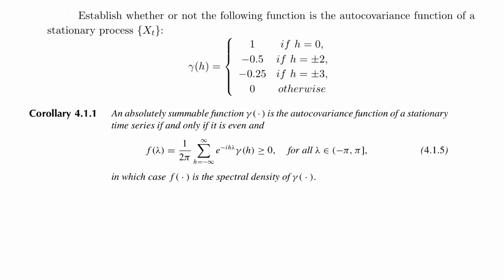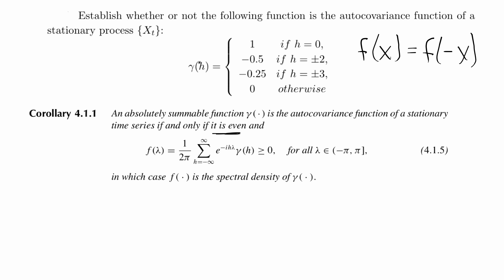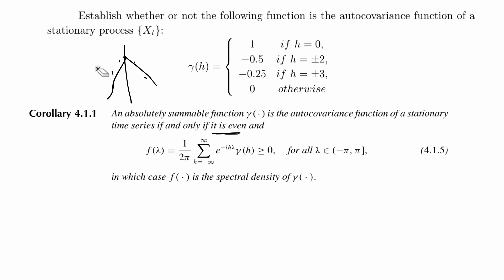So let's go ahead and solve the problem. The first thing we need to determine is whether or not this is an even function, and we can see very quickly that it is just from the definition of the domain. An even function means f of x equals f of negative x. We have plus or minus 2, plus or minus 3, and 0 as the only values where gamma of h is defined, and the values are the same for positive and negative. So this function is clearly symmetric on the y-axis, and we've successfully proven it's even.